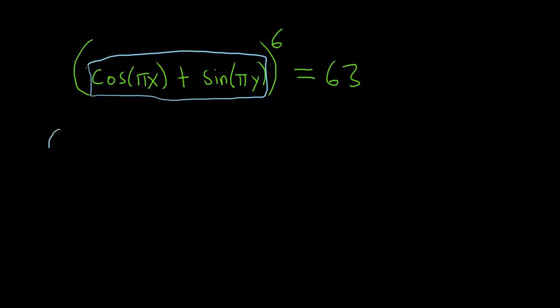We'll start by bringing down the 6, so 6, then leave the inside untouched, so cosine πx plus sine πy. And we subtract 1, so we get 5, and then times the derivative of the inside function.